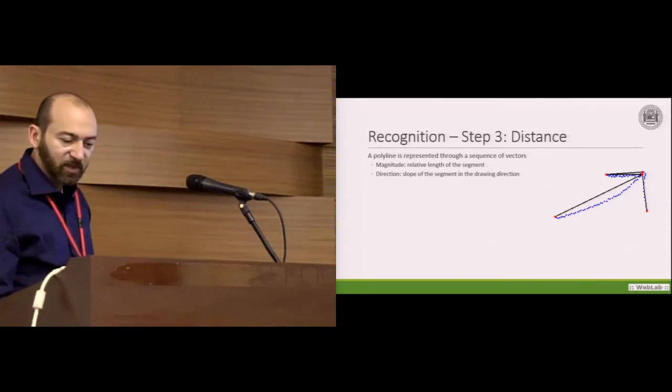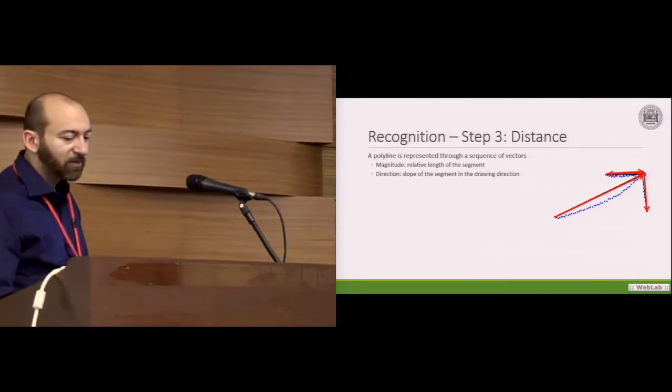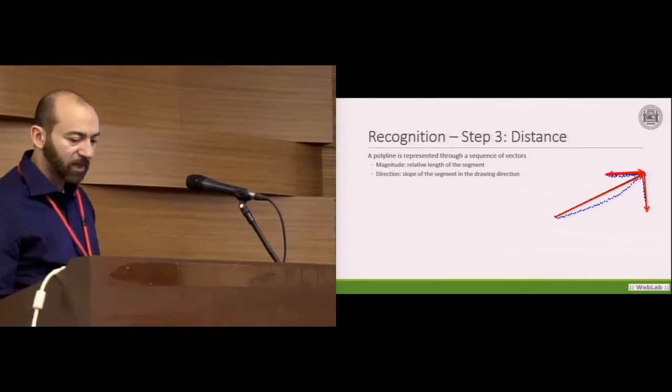The final step is the calculation of the distance. A polyline is represented through a sequence of vectors. The magnitude is the relative length of a segment, and the direction is the slope of the segment in the drawing direction.